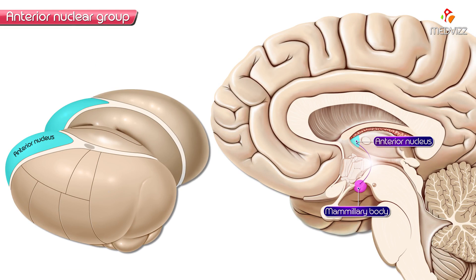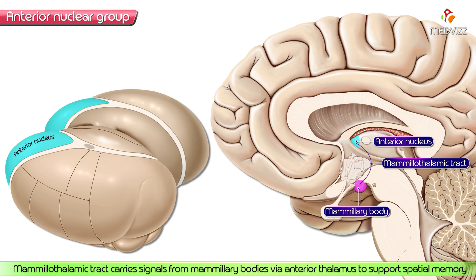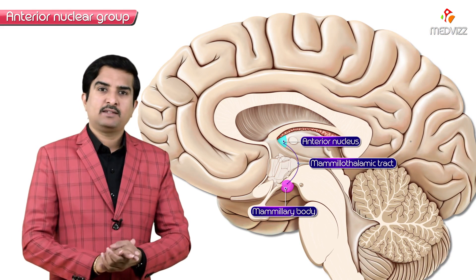The anterior nuclear group receives large afferent projections from the mammillary body of the hypothalamus by means of the mammothalamic tract. This mammothalamic tract carries signals from the mammillary bodies via the anterior thalamus to support spatial memory.